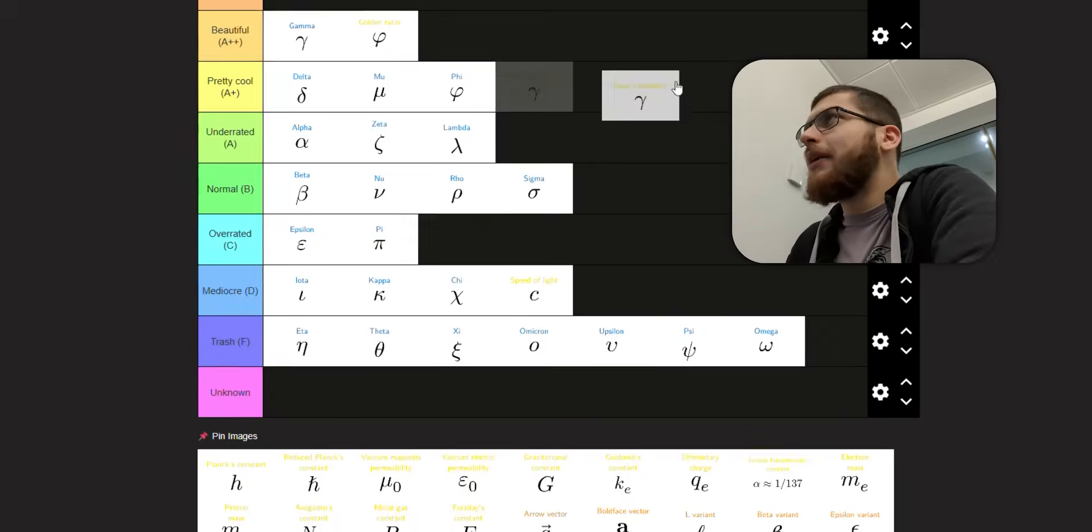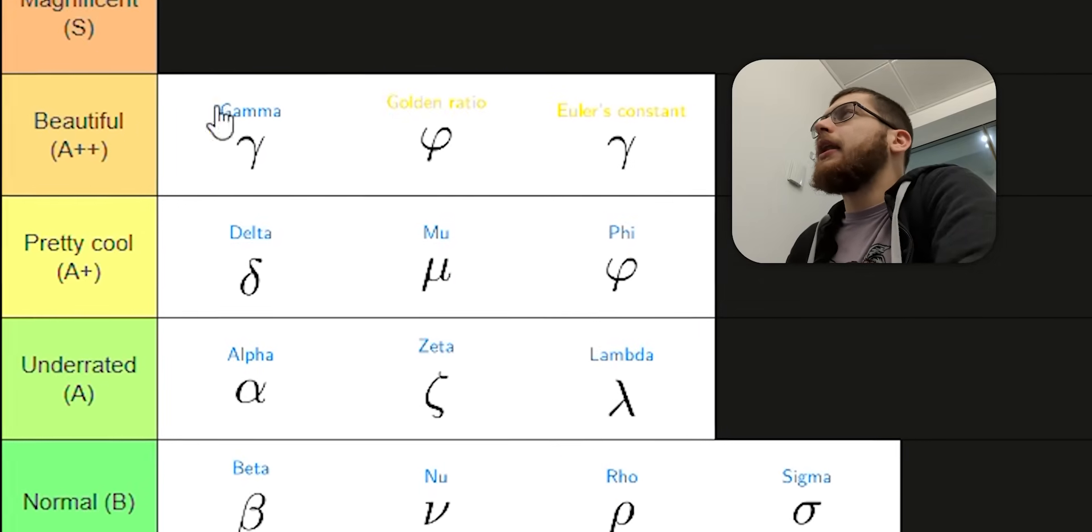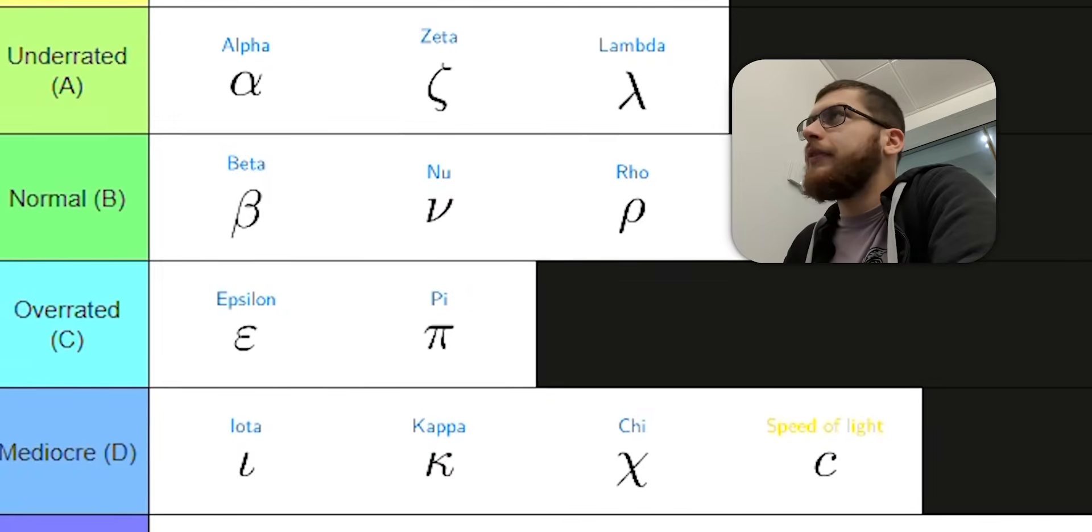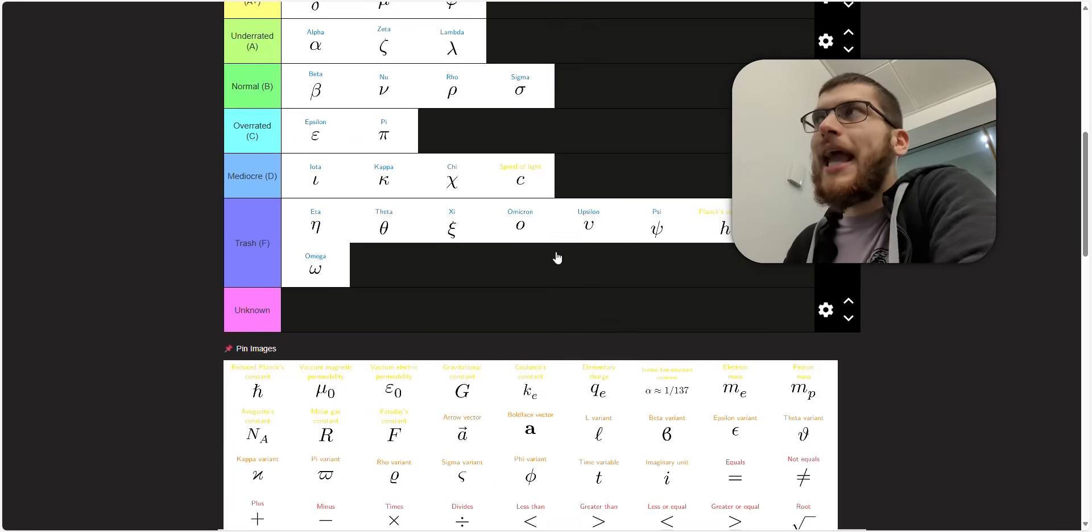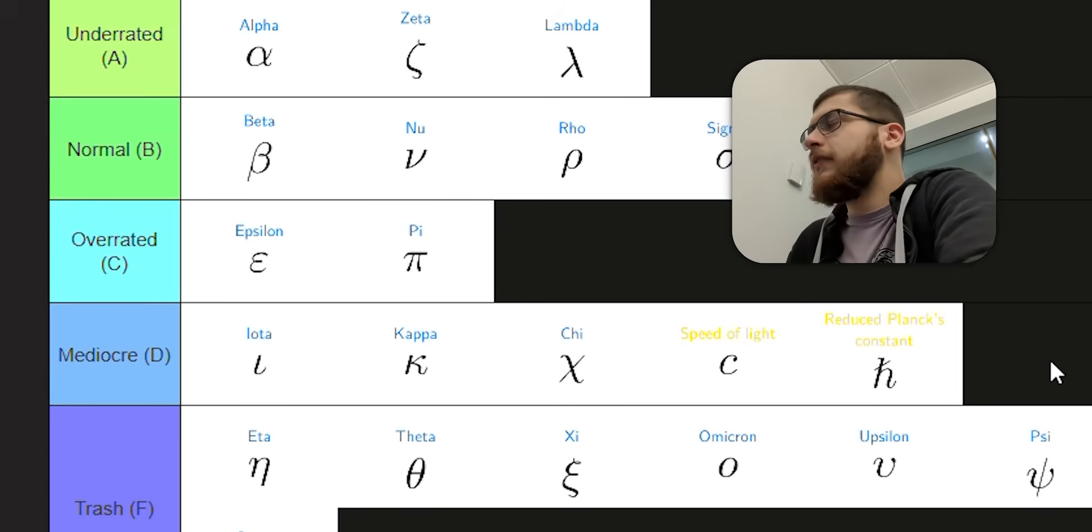Euler's constant. We've done gamma. I'll put it in here. It's a very nice symbol and a very nice constant. Planck's constant H makes no sense. Why H? Why not P? Or why not PL? The reduced Planck's constant, the slash makes the reduced make sense. Planck's constant should just be P.